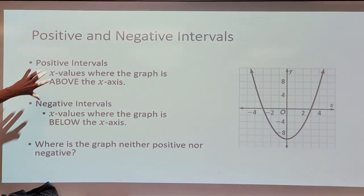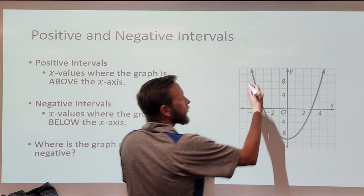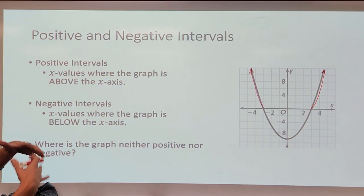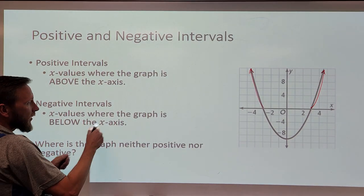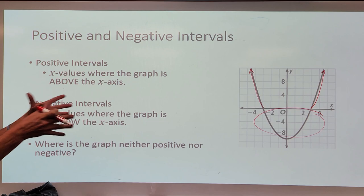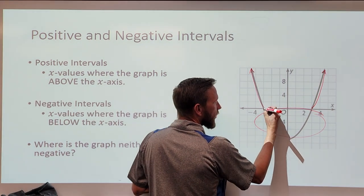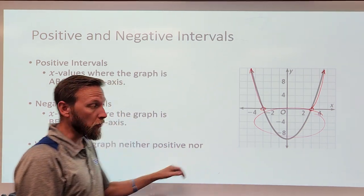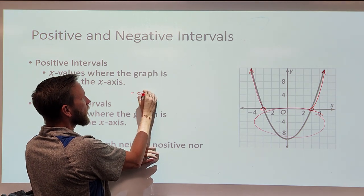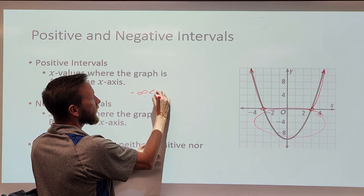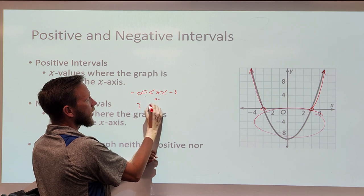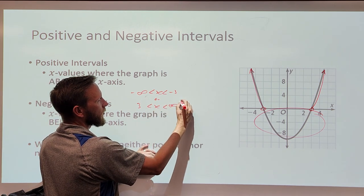Let's focus first on what are positive intervals and negative intervals. The positive intervals are those parts of the graph — those values of x — where the outputs, the y values, are above the x-axis. The negative intervals are the ones that are below the x-axis. In this particular picture, the y values are positive when you go from negative infinity, less than x, to negative 3, and when you go from 3, less than x, to positive infinity.